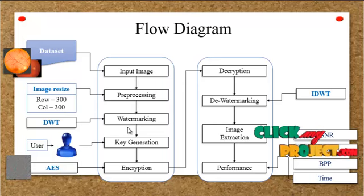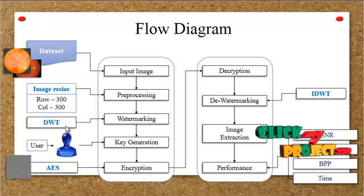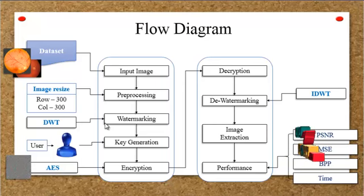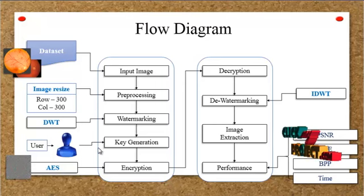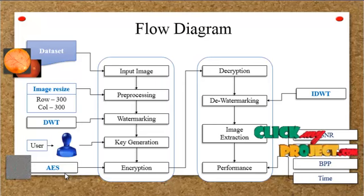After pre-processing, the pre-processed image goes to the watermarking step. DWT is applied for watermarking, which combines input image 1 and image 2. After watermarking, key generation is carried out based on the type of text. After generating the key, encryption is carried out — in this encryption step, AES encryption is used to encrypt the image.